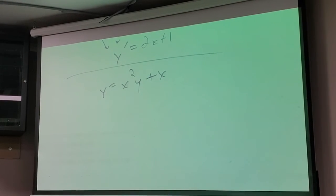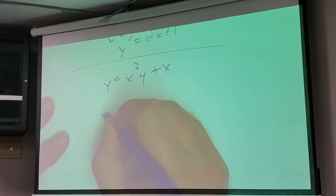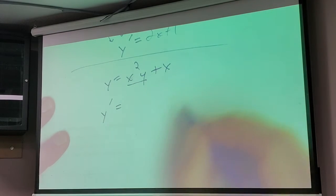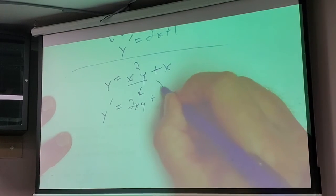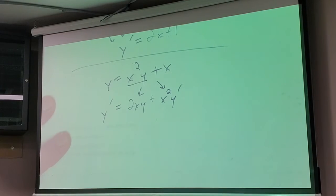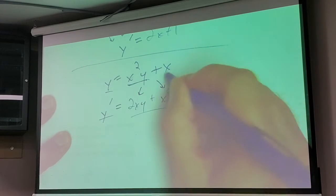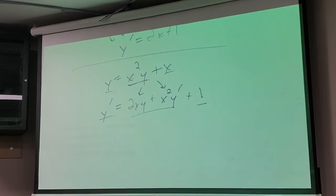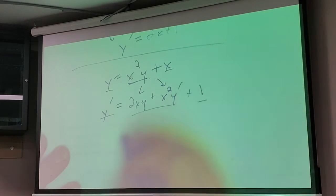See how this is implicitly written right now? I would do y prime equals... now what do I have to do here? Two x y, plus x squared y prime, plus one. I'm just taking the derivative of both sides — derivative of stuff separated by pluses and minuses means I take the derivative of each term: bam, bam, bam. This is nothing new. Then I solve for y prime.